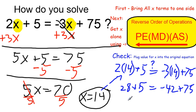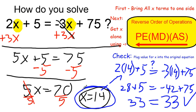28 plus 5 is equal to 33, and negative 42 plus 75 is just like 75 minus 42, which again is in fact equal to 33. So that does work out, and our solution of x equals 14 is true. When I put 14 into the original equation, I get a true statement. Thank you very much.